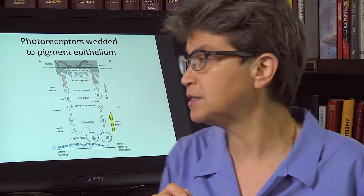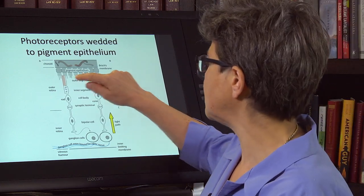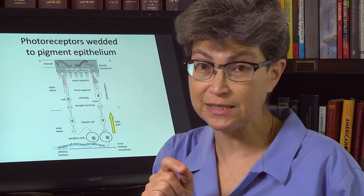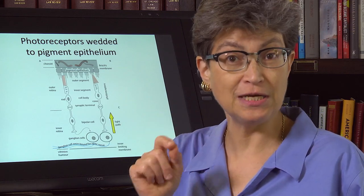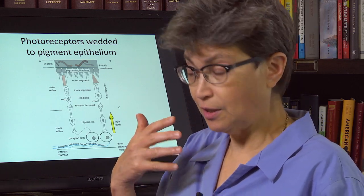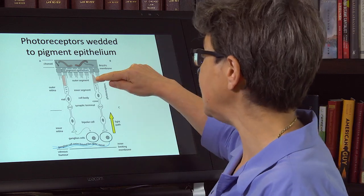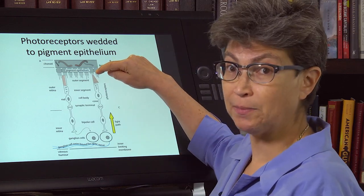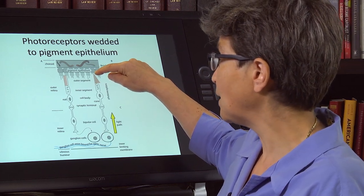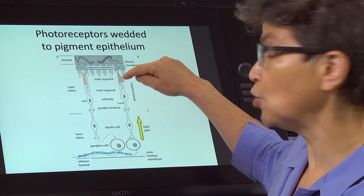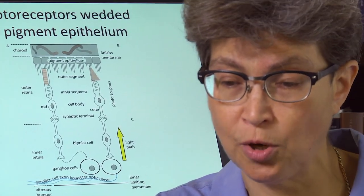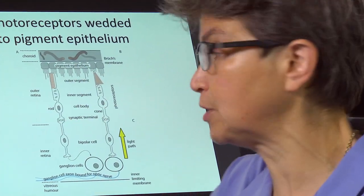And the answer is that these outer segments, which is where the phototransduction takes place, it's a very difficult biochemical and cell biological task. And it needs an assist from the pigment epithelium. The outer segments, without the pigment epithelium, don't work. They absolutely don't work. And we'll see that they don't work on a small timescale, and they don't work on a longer timescale.